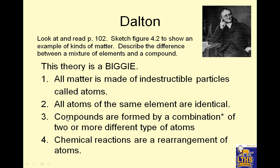About 1000 years later, John Dalton came along. He was a scientist who looked at some experiments and was able to interpret those. Please read page 102 — you can pause this and start now. There's a figure, 4.2, I want you to sketch into your notes. It kind of looks like this and has four sections, but it helps you see visually what we think of elements and compounds.